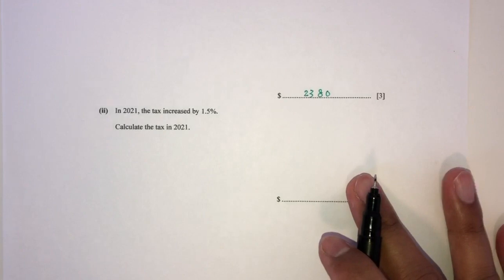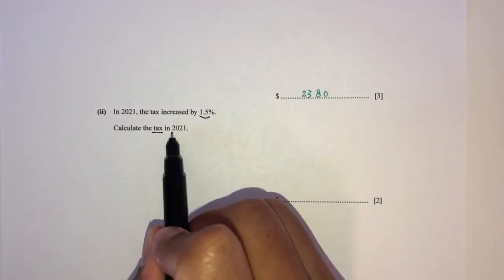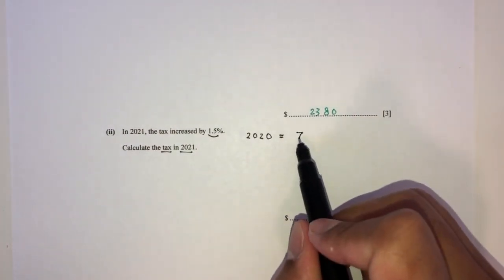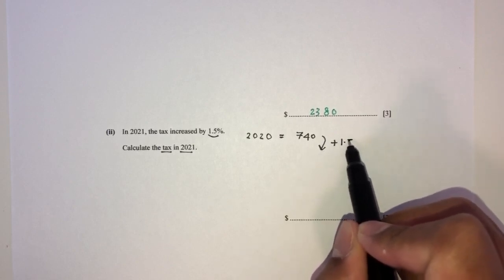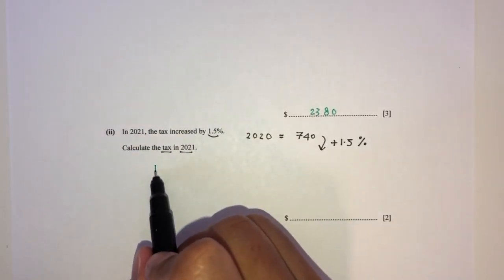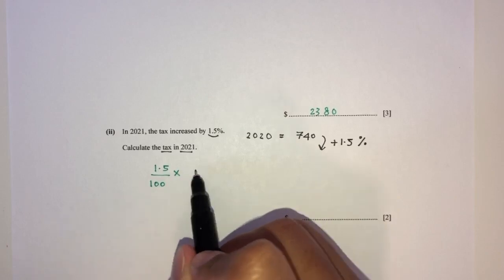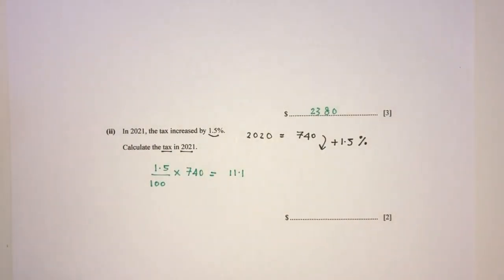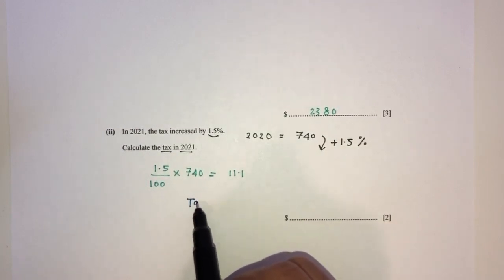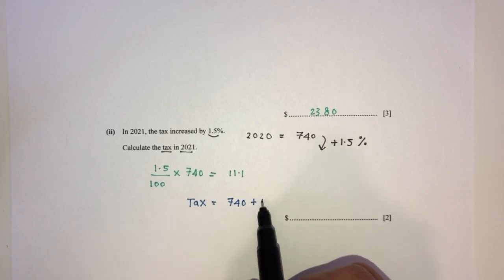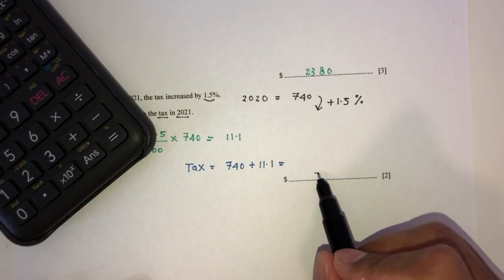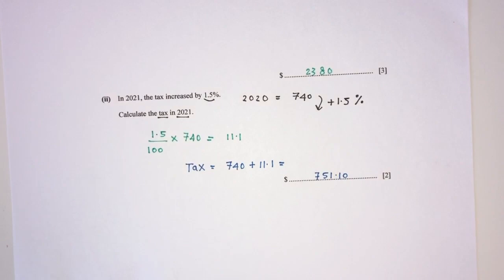For part two, in 2021 the tax increased by 1.5%. We know in 2020 he paid 740 in tax. So 1.5% of 740 is 1.5 divided by 100 times 740, which gives 11.1. The new tax for 2021 will be the initial amount plus the increase: 740 plus 11.1 equals 751.10. That is the new tax amount he will pay in 2021.